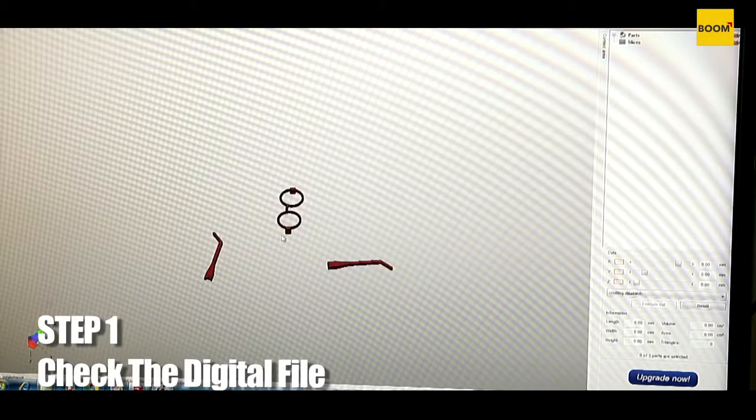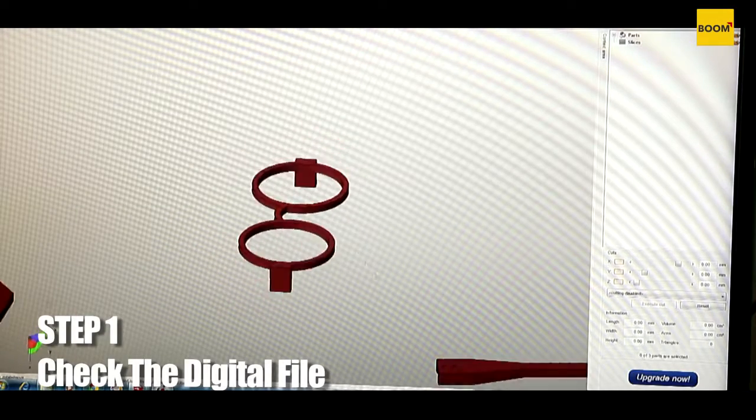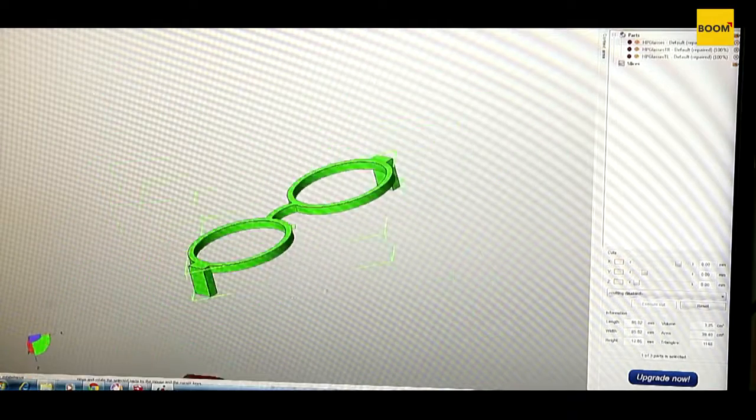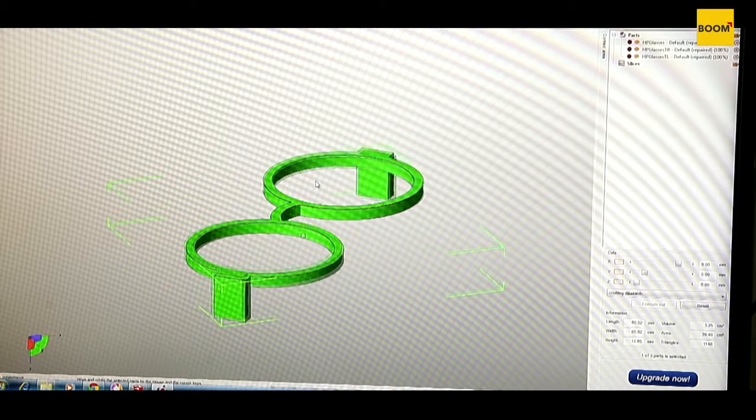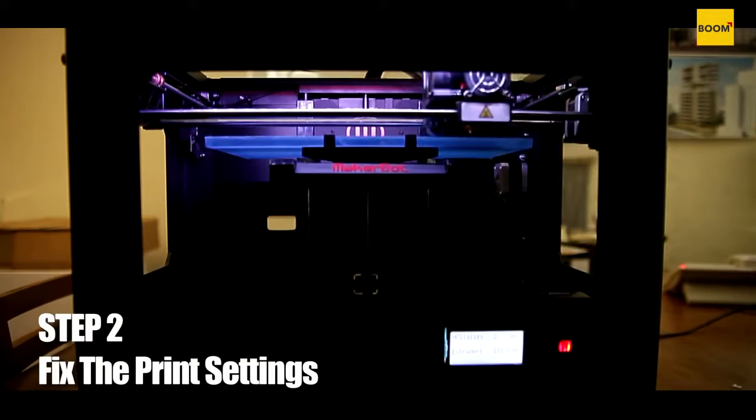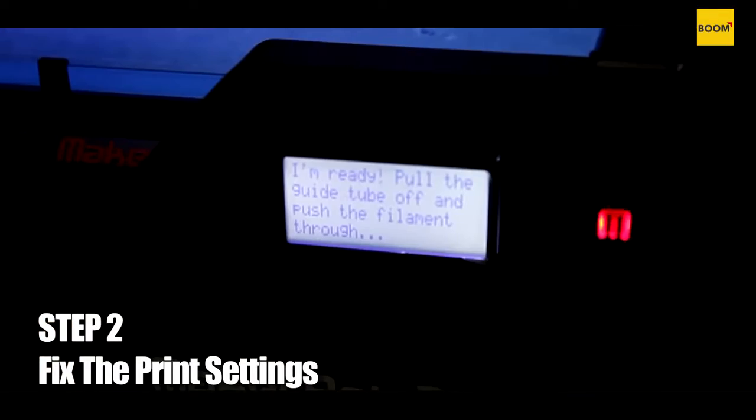The first step in the series is to take the digital file of this object and examine it for errors. Once you have a correct file, we can move to the next stage which is to actually decide the print settings for this object.